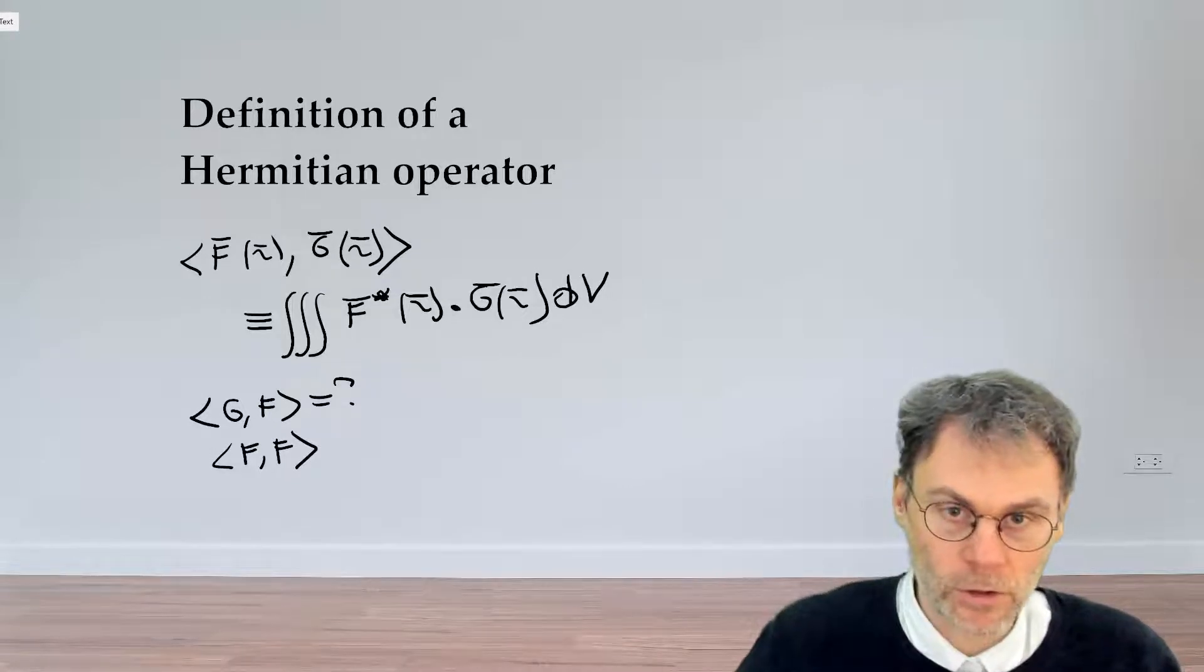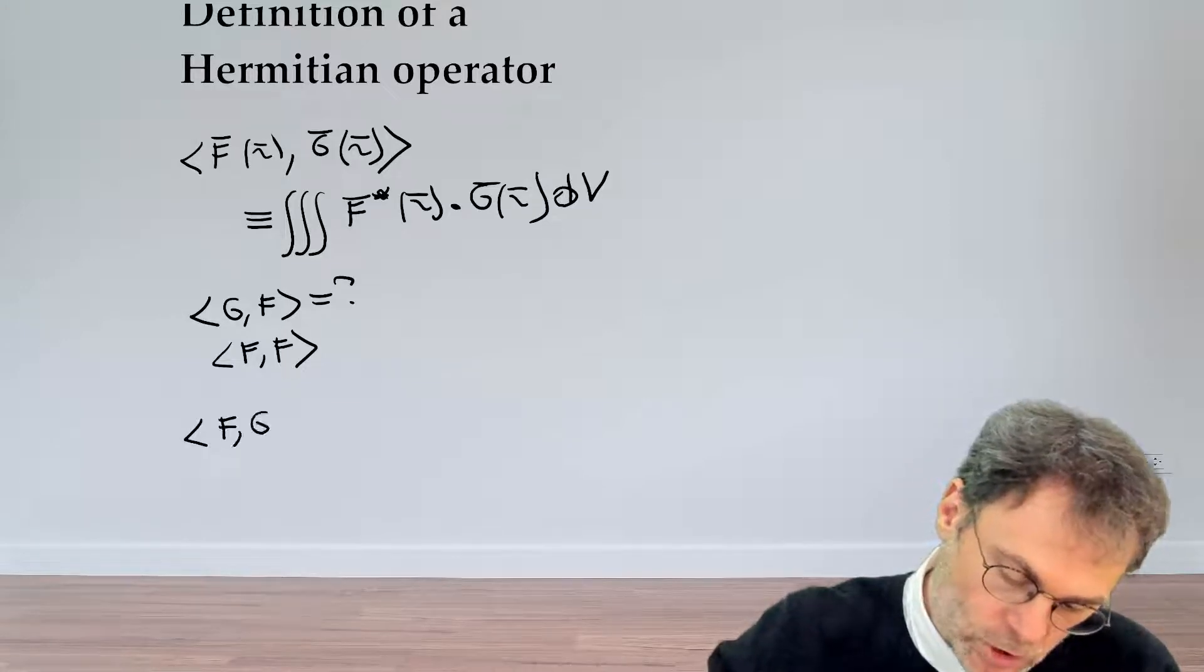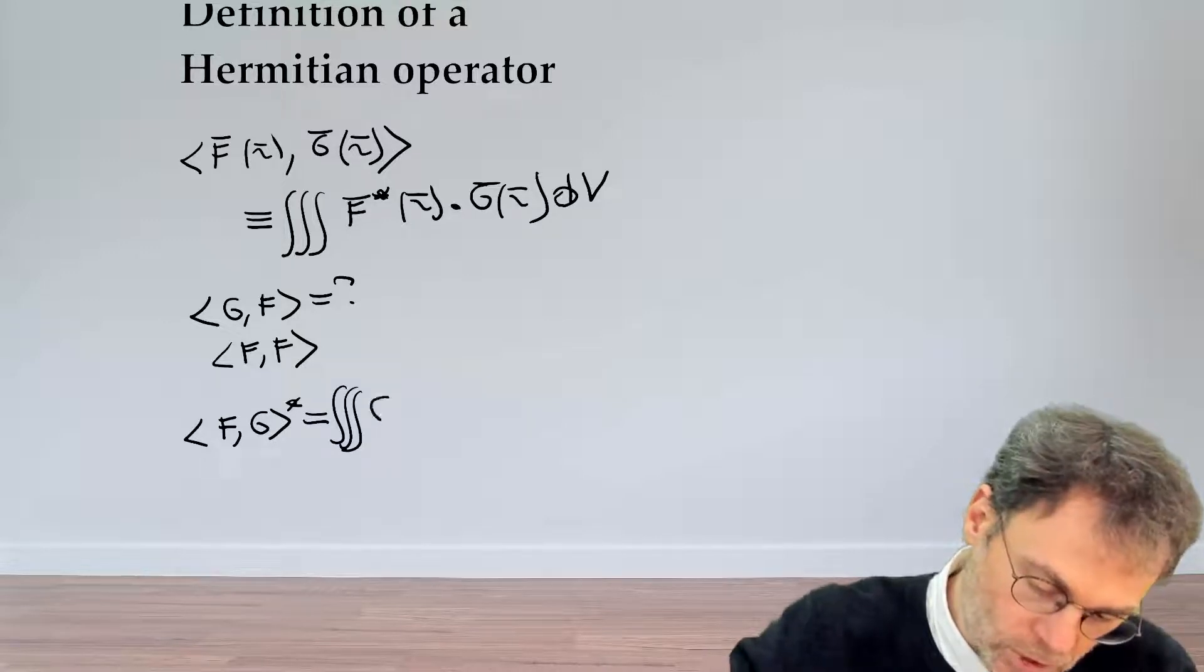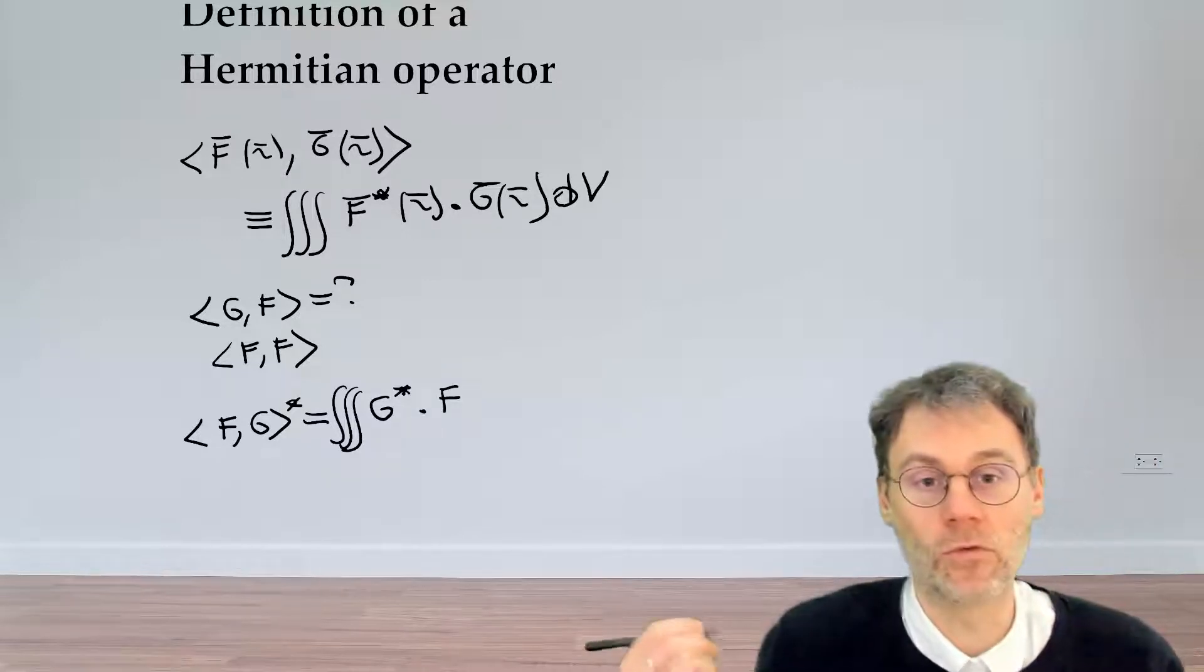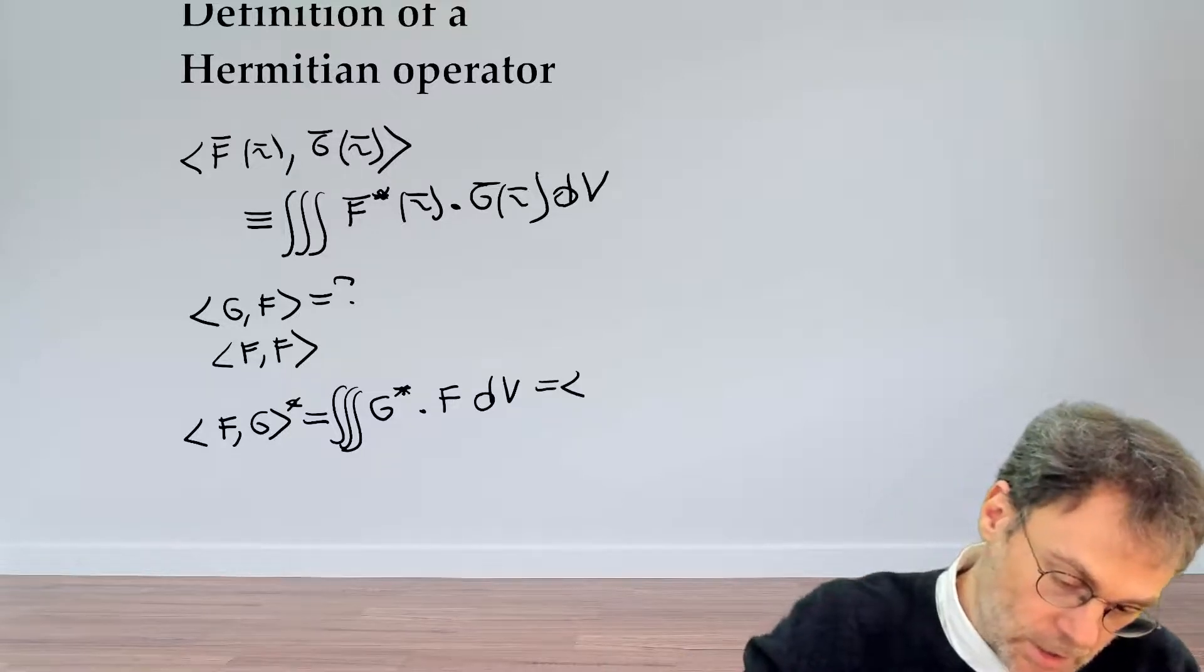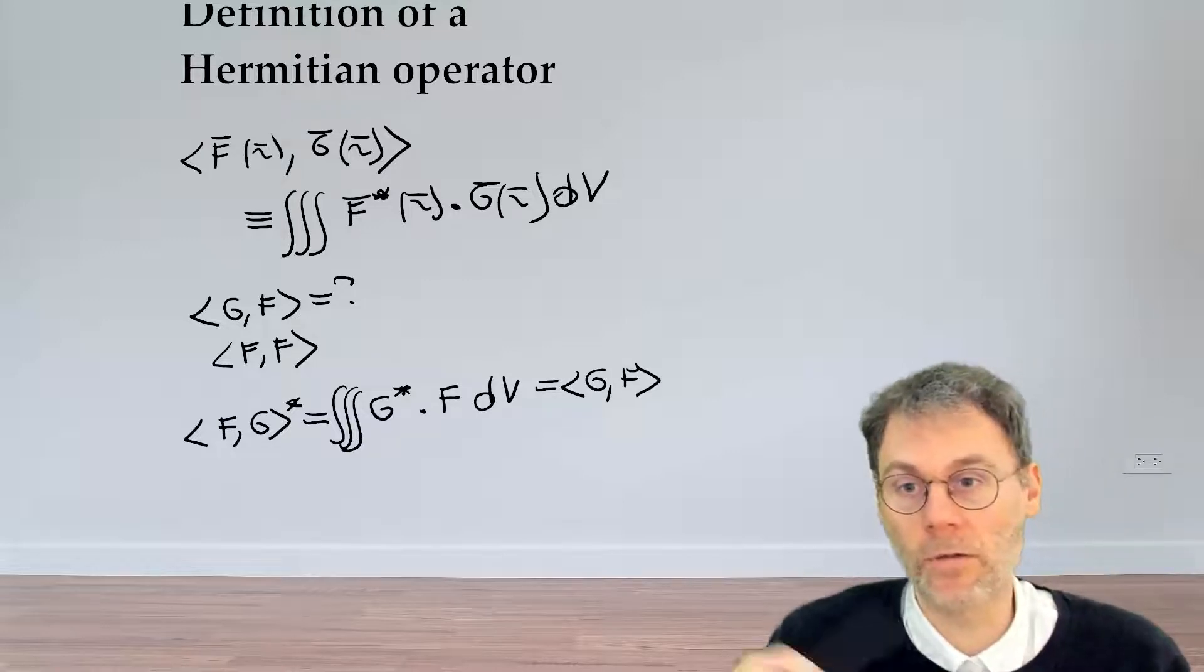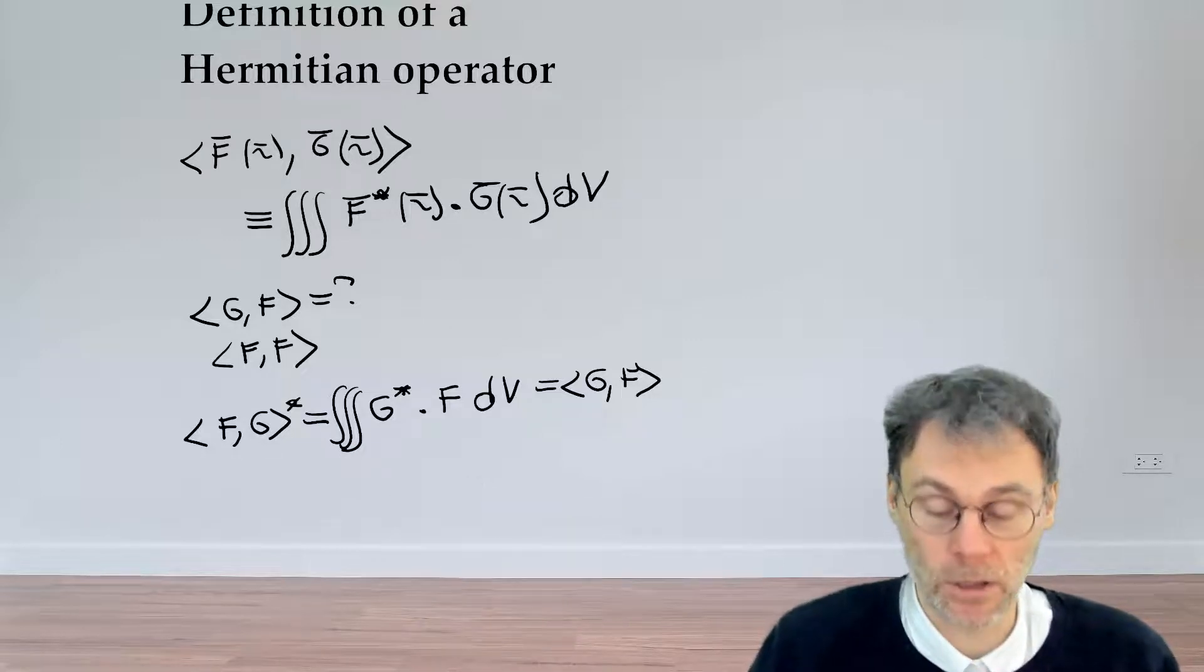Now if we have our definition, and if we just for fun try to take the complex conjugate of that definition, what do we end up with? Well, we end up with basically the complex conjugate now of the second function, and then we multiply with the regular first function f dV. And this, by definition, is the scalar product of g with f. So this is not entirely commutative because we pick up an extra complex conjugate sign over here. So be aware of this subtlety.